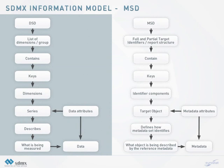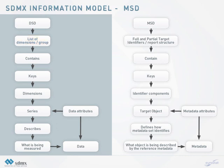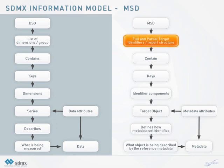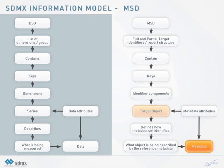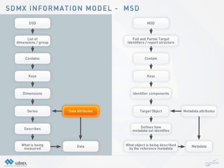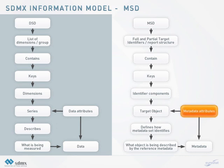The SDMX information model intentionally models the metadata structure definition in a way that is similar to the data structure definition. Where the dimension list, and to some extent groups, in the DSD contains dimensions which define how a data set describes what is being measured, the full and partial target identifiers in the MSD contain identifier components which define how a metadata set identifies what object is being described by the reference metadata. In the DSD, the attribute list and measure list contain attributes, measures and attachment information which describe what information is in the data set and how it is presented. Similarly, the report structures in the MSD contain metadata attributes which describe what concepts are included in the reference metadata set.